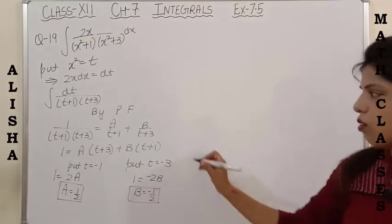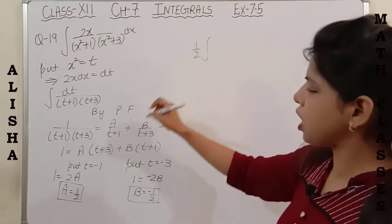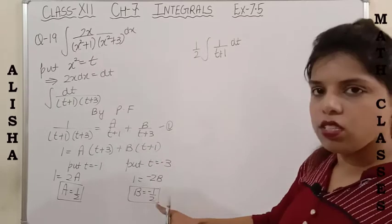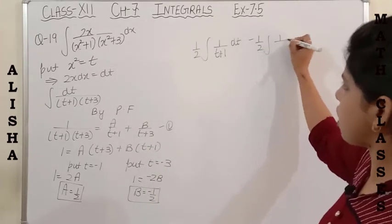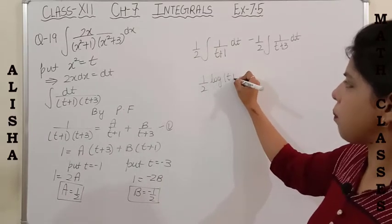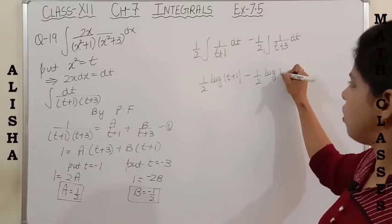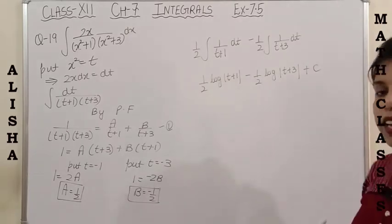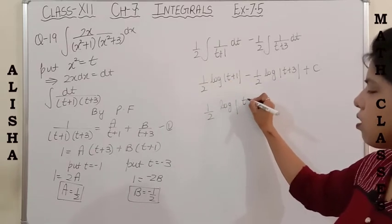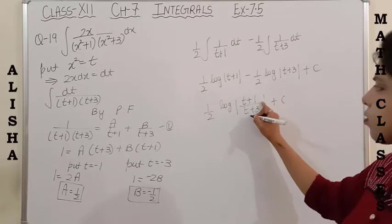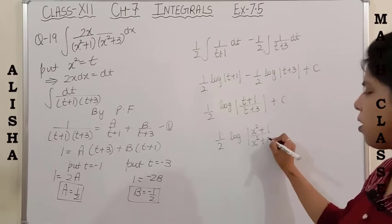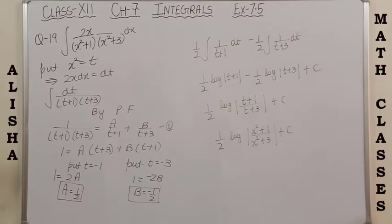Replacing these values in equation 1: (1/2) integral of 1/(t+1) dt minus (1/2) integral of 1/(t+3) dt. Integrating: (1/2) log(t+1) minus (1/2) log(t+3) + C. Taking 1/2 common and using log m − log n = log(m/n), this becomes (1/2) log[(t+1)/(t+3)] + C. Finally, replacing t = x²: the answer is (1/2) log[(x²+1)/(x²+3)] + C.